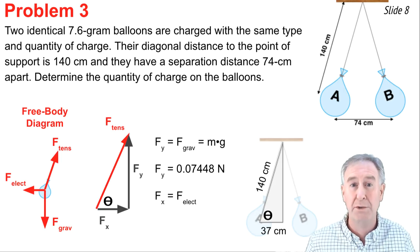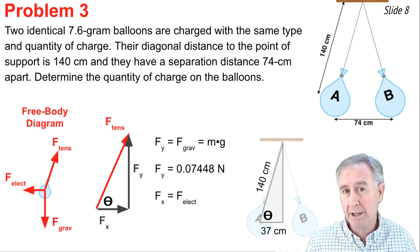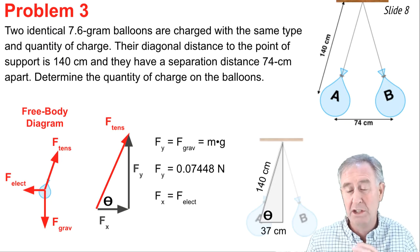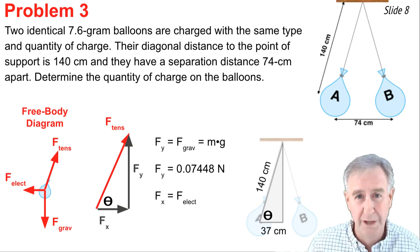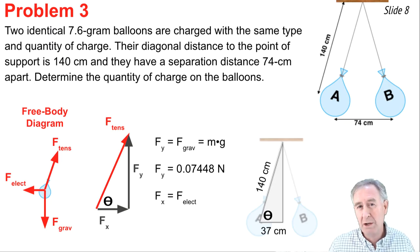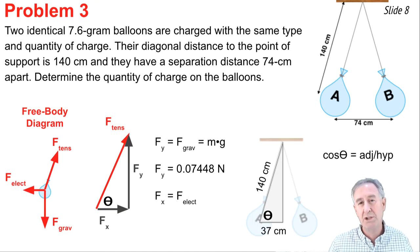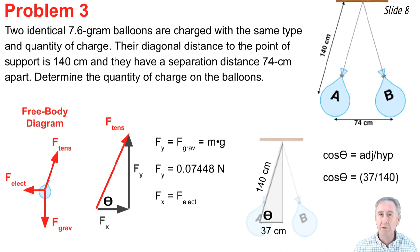So I should be able to calculate theta in that triangle. It's the same triangle as our force triangle over here. So I say cosine theta is equal to the side adjacent over the side hypotenuse. Cosine theta equals 37 over 140. And theta is equal to the inverse cosine of 37 over 140. Use your calculator 74.675 degrees.